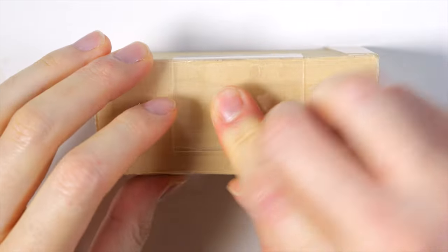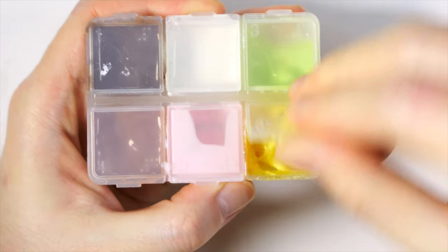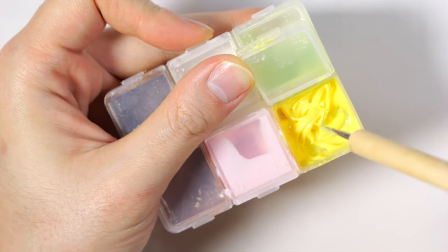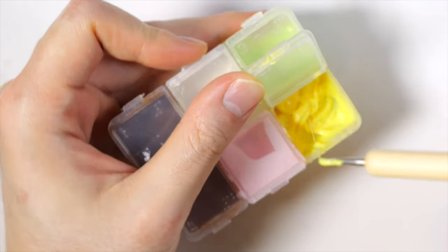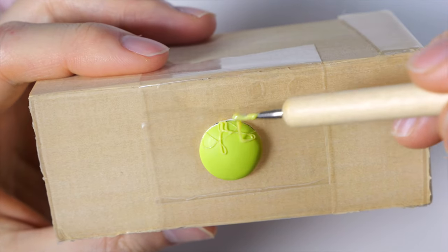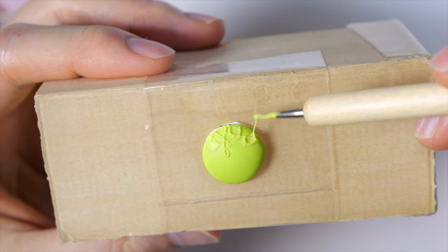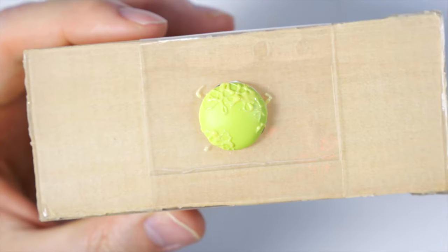So next we're going to make the honeydew melon, which was kind of annoying because it has this like intricate design. So I have a mixture of clay and liquid clay. And I just kind of pulled it into little stringies and kind of spread it everywhere. It's not exact, but it's the best I can do.